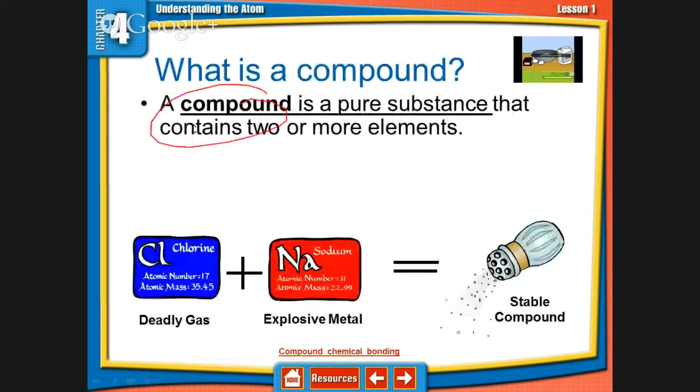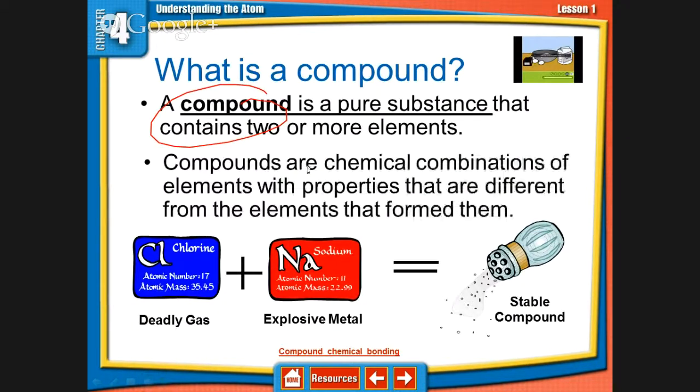A compound is a completely pure substance made up of two or more elements, such as chlorine and sodium. But the big idea about this is that the new substance formed acts or looks nothing like what you used to make it.